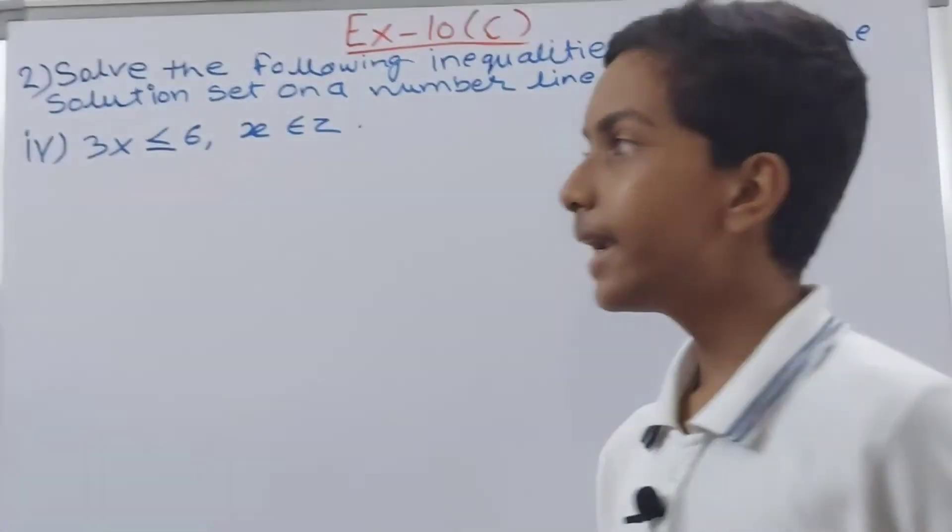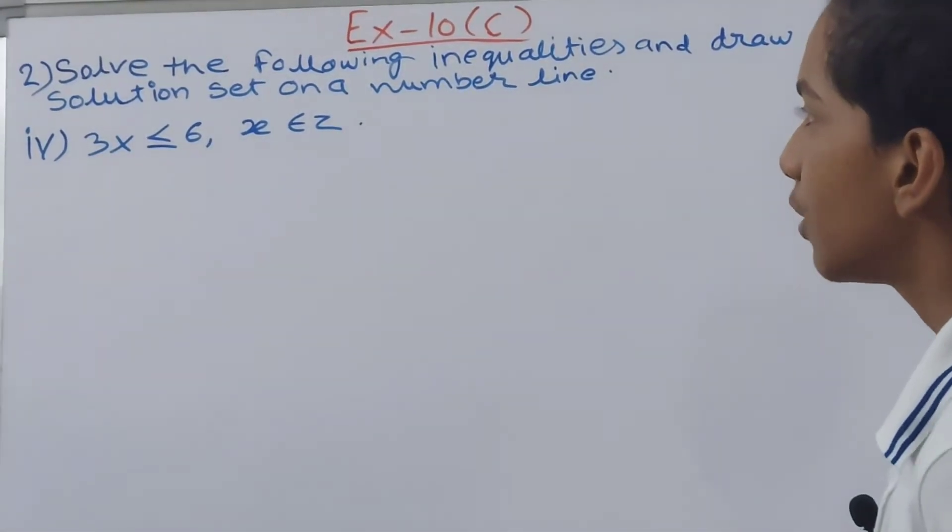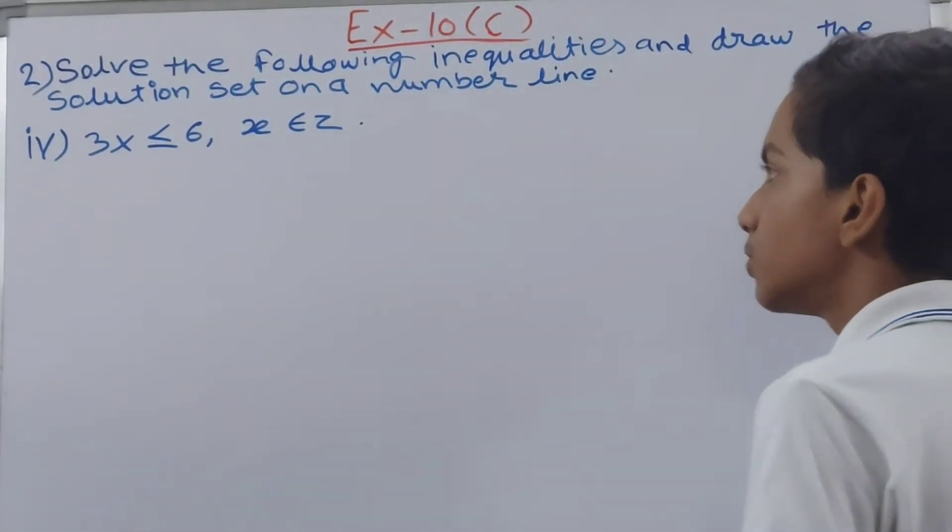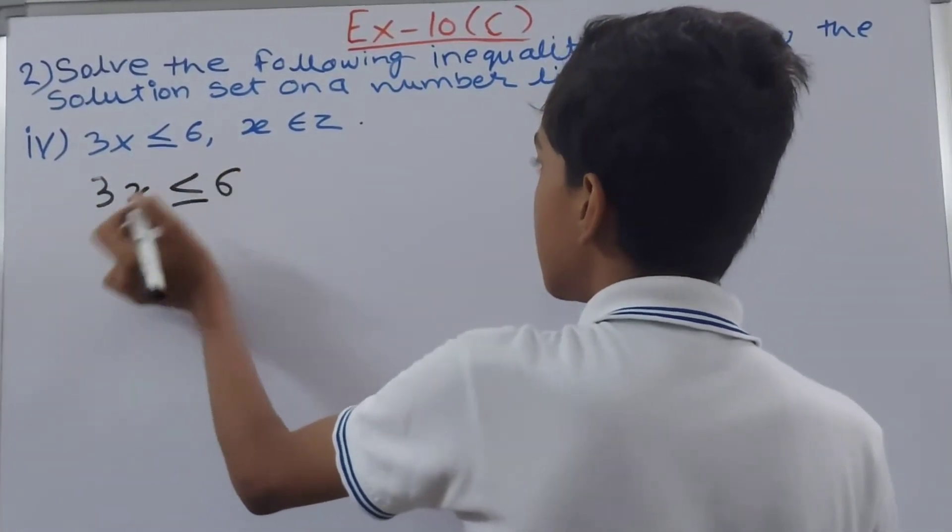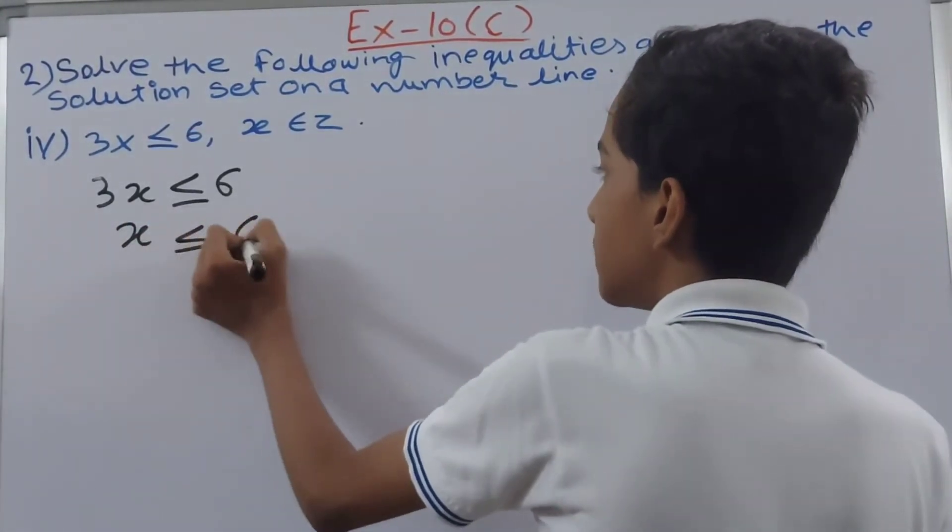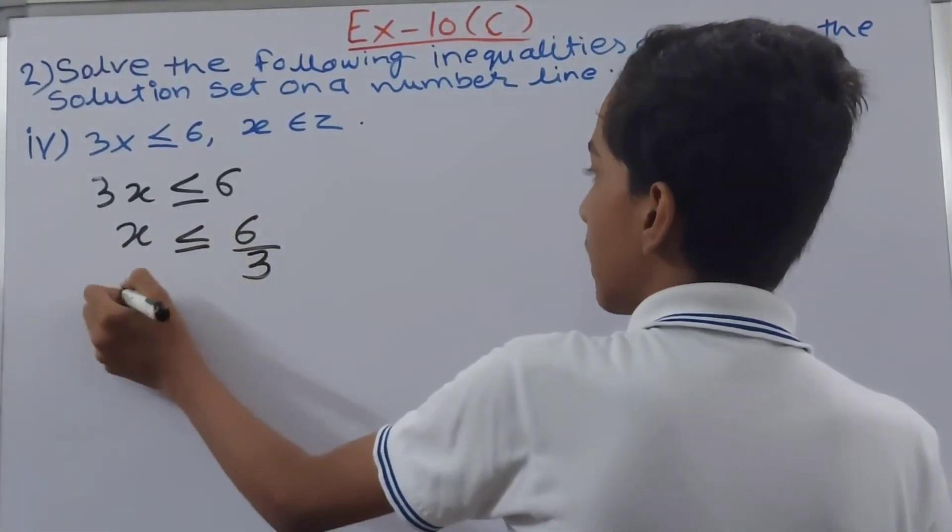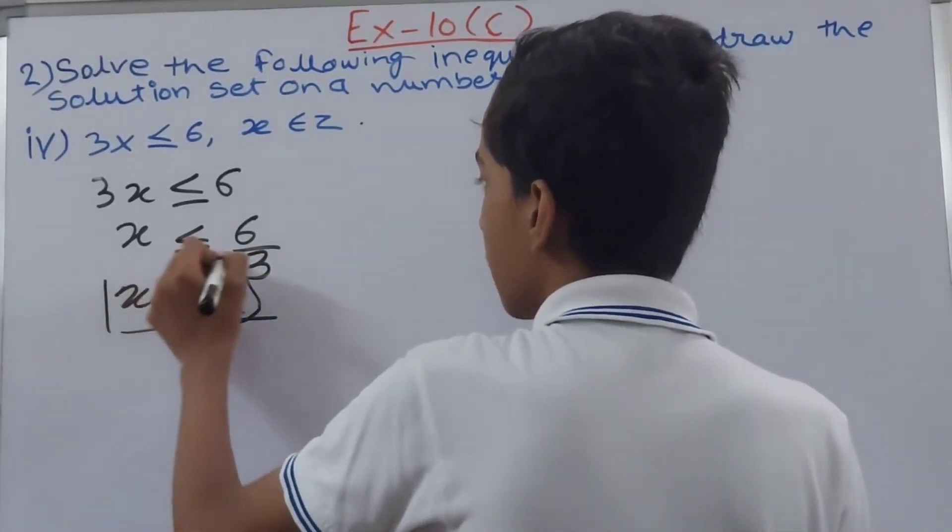And now on to the fourth part here. This is 3x is less than or equal to 6, x belongs to integers. So 3x is less than or equal to 6. This gets solved like x is less than or equal to 6 upon 3. So x is less than or equal to 2 basically. This is the solution of our inequality.